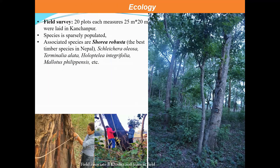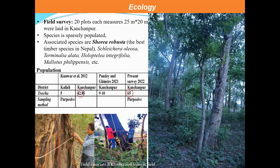In terms of ecology, we carried out an ecological study. The species commonly associates with Shorea robusta, which is very common in Nepal and India and is the dominant species in the region. Other associates include Terminalia species. Regarding population, comparing to data from 2012, the population of this species is showing decline. In 2021, we found around 65 individuals per hectare compared to approximately 42 individuals per hectare in 2012.